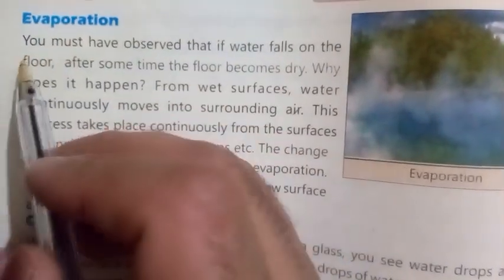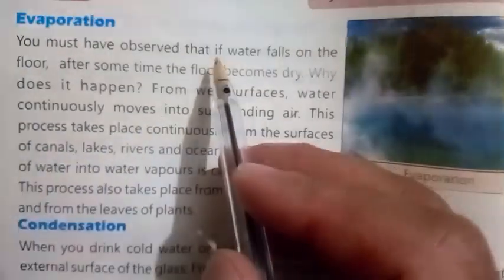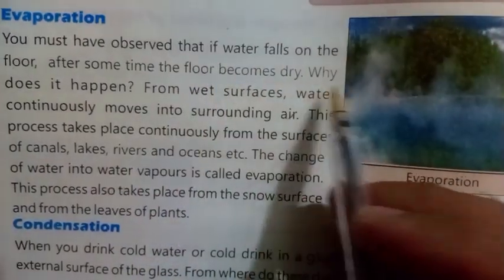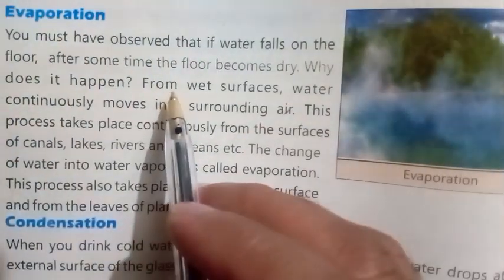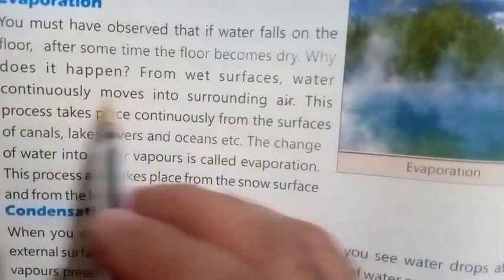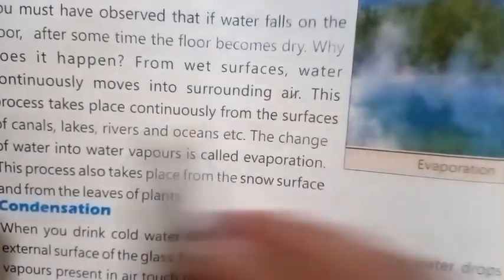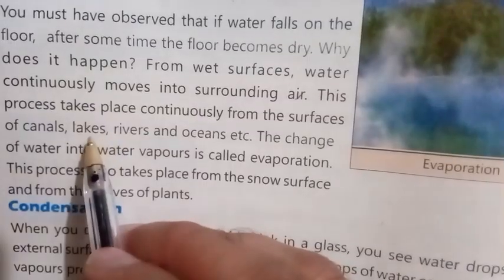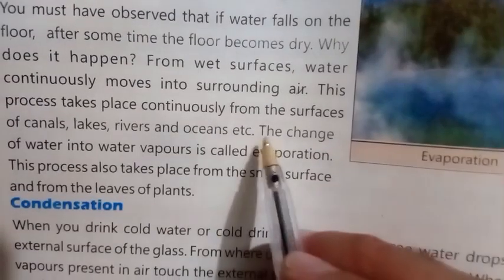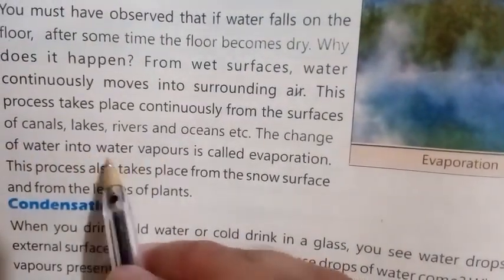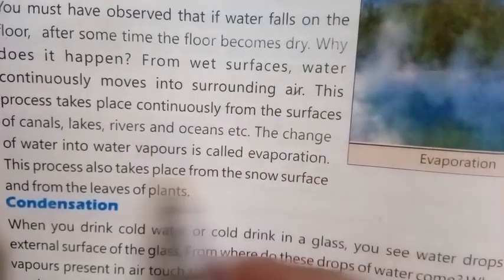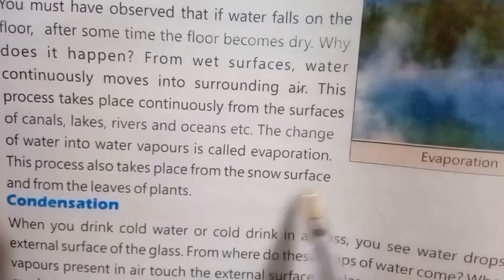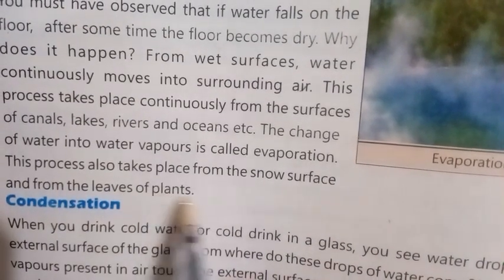Evaporation: you must have observed that if water falls on the floor, after some time the floor becomes dry. Why does this happen? From wet surfaces, water continuously moves into the surrounding air. This process takes place continuously from the surfaces of canals, lakes, rivers, and oceans. The change of water into water vapors is called evaporation. This process also takes place from the snow surface and from the leaves of plants.